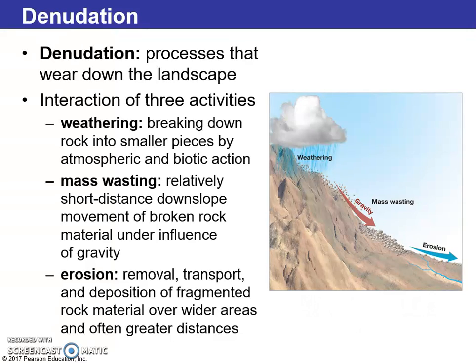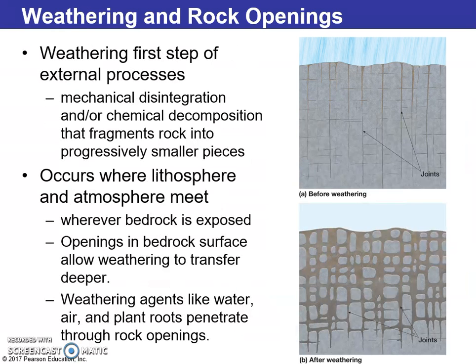So denudation covers weathering — breaking down rock — mass wasting, and erosion. I had an episode of this driving up in the mountains last year, having some rock fall down on the road. It punctured a couple of my rims in my car — not only blew the tires, but it wasn't cheap. We have that happen in Colorado quite a bit. We also see this with avalanches and so forth.